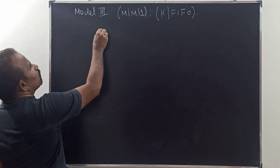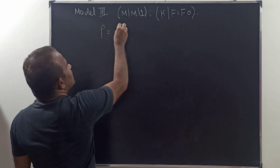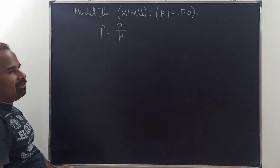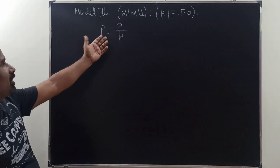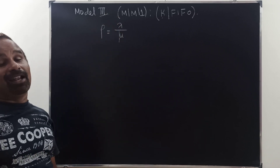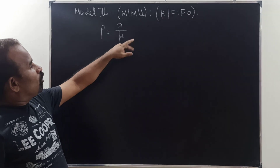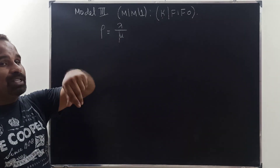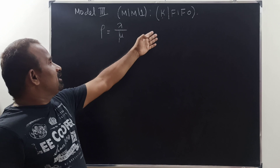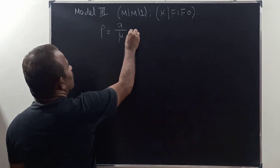Here I am going to take rho, the traffic intensity, equal to simply lambda by mu, without any restriction. Lambda may be less than mu or mu may be less than lambda. So we are going to look into two cases: lambda is less than mu or greater than mu, or simply lambda is not equal to mu, or lambda is equal to mu.